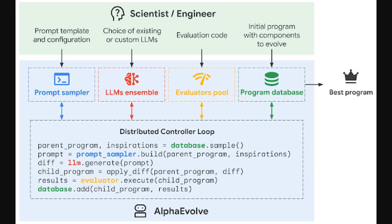Alright, so this diagram really breaks down how AlphaEvolve operates. At the top, you see input from a scientist or engineer. They provide things like prompt templates, which are essentially blueprints for asking the AI questions. They choose the LLMs, set up evaluation code to judge the AI's output, and provide an initial program to start with.